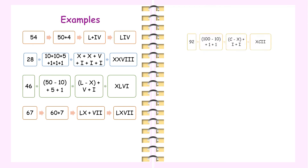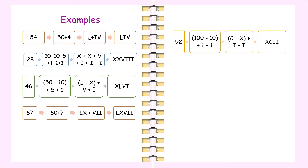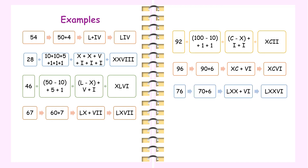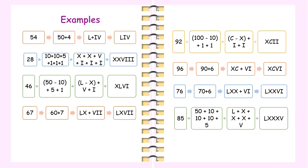92 is expanded as 100 minus 10 plus 1 plus 1, that is C minus X plus I plus I, so 92 is written as XCII. 96 is written as 90 plus 6, that is XC plus VI, so 96 is written as XCVI. 76 is written as 70 plus 6, that is LXX plus VI, so 76 is written as LXXVI. 85 is written as 50 plus 10 plus 10 plus 10 plus 5, that is L plus X plus X plus X plus V, so 85 is written as LXXXV.